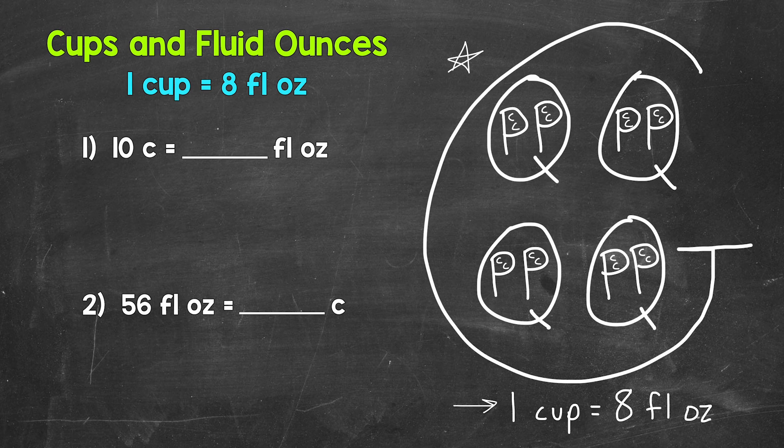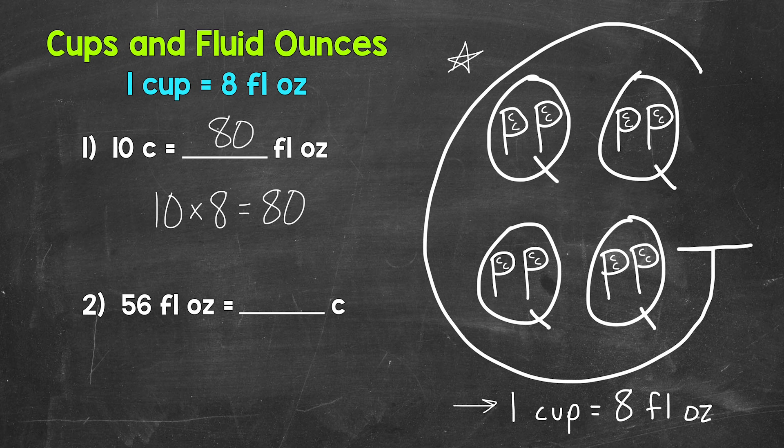So we need to do 10 times 8. That's how we convert from cups to fluid ounces—we multiply by 8. 10 times 8 gives us 80, so 10 cups equals 80 fluid ounces.